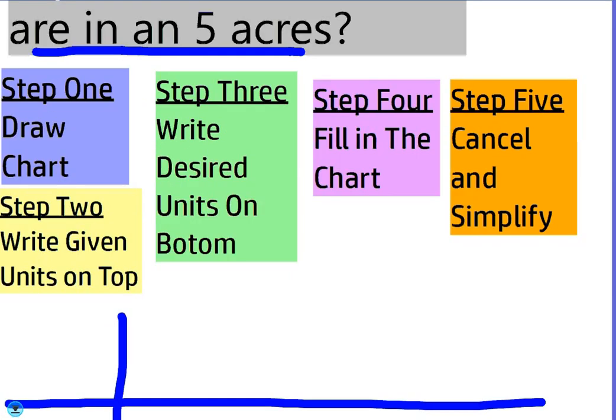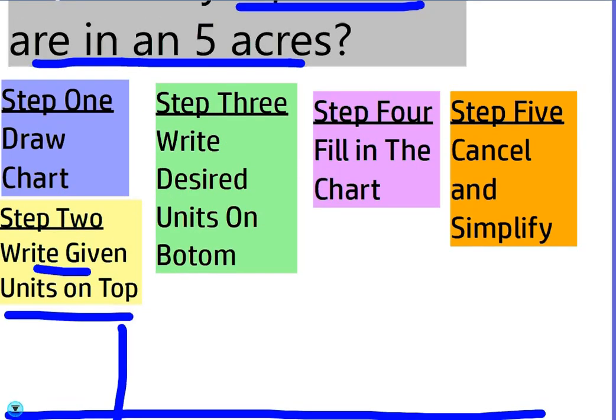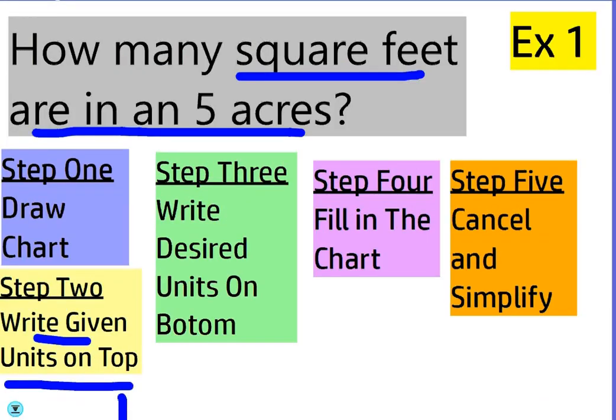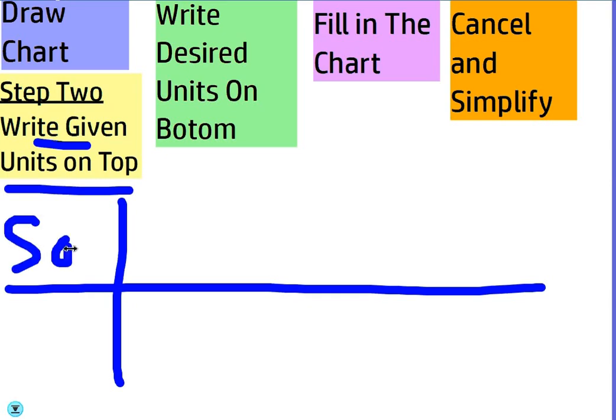Then you're going to write your given units on top. So they gave us what? Five acres. So you're going to write five, I'll just write AC for acres.